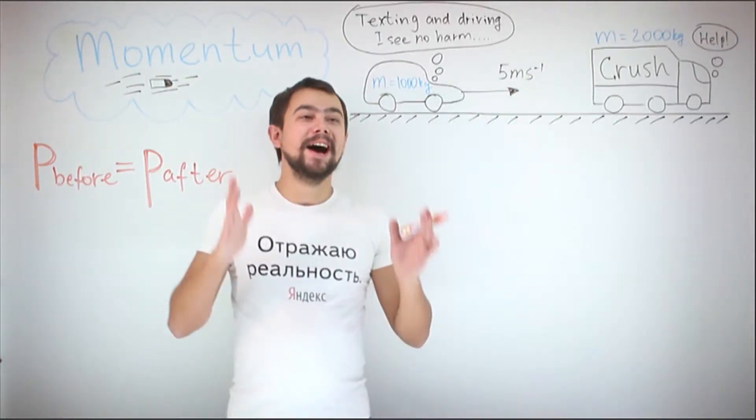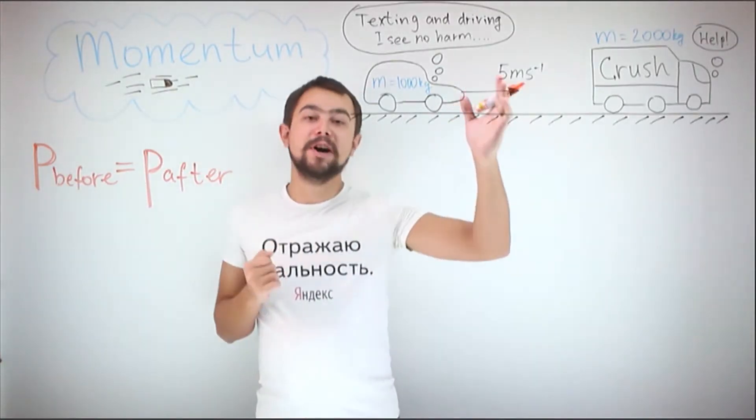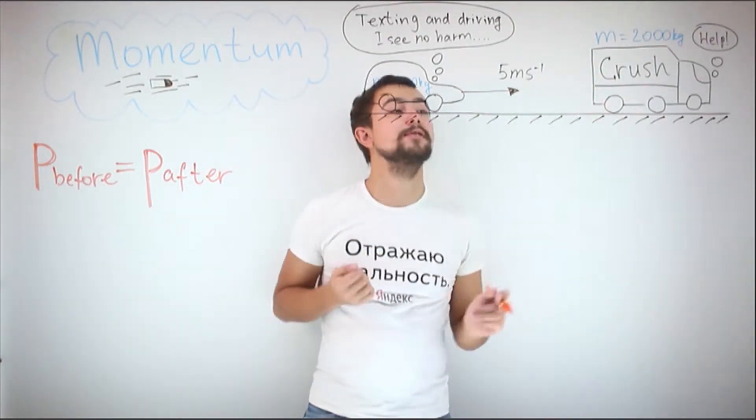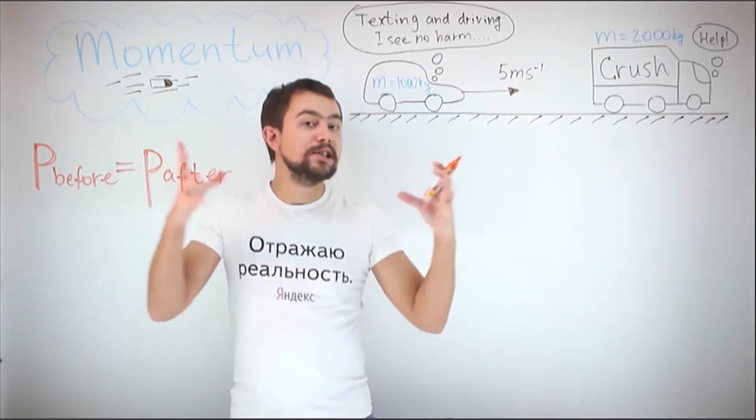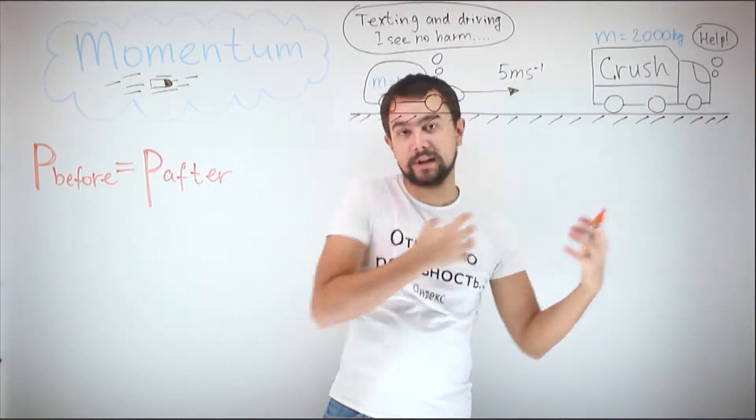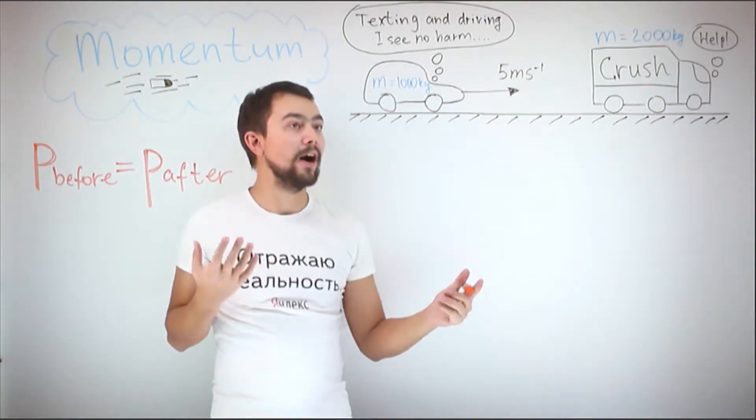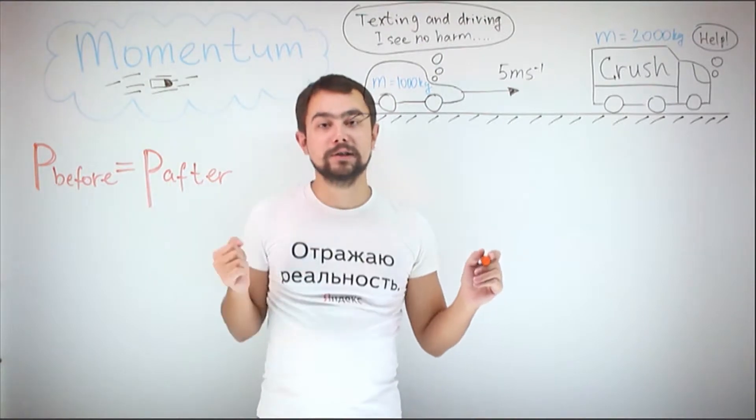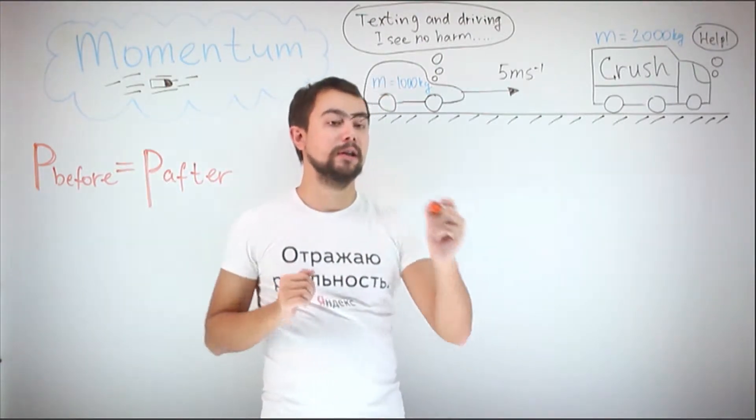A simple example. A car traveling at 5 meters per second hits a stationary truck of mass 2,000 kilograms. They stick together and move as one whole thing after the collision. We need to calculate the momentum before the collision and momentum after the collision.